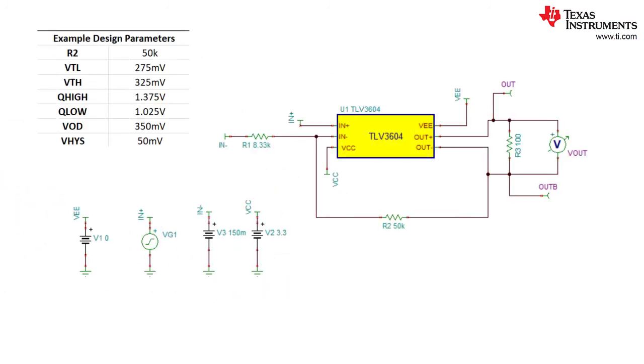For our simulated example, we have the design parameters shown in this table with a 50 millivolt hysteresis window. Using these design parameters and the equations we previously derived, R2 was selected to be 50 kilo ohms, R1 was calculated to be 8.33 kilo ohms, and VREF was calculated to be 150 millivolts.